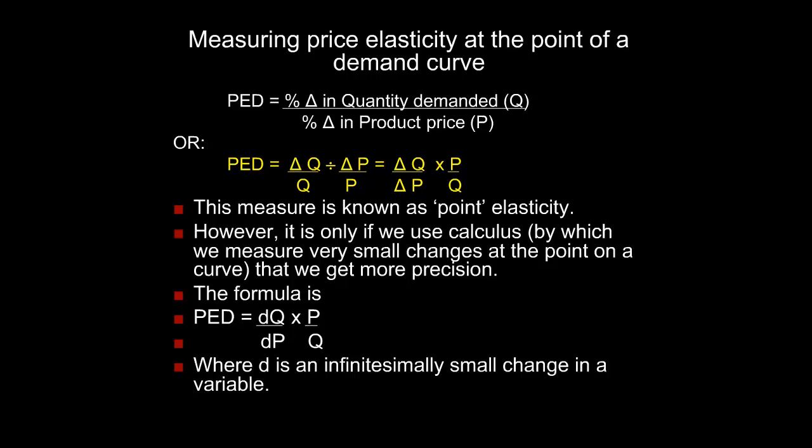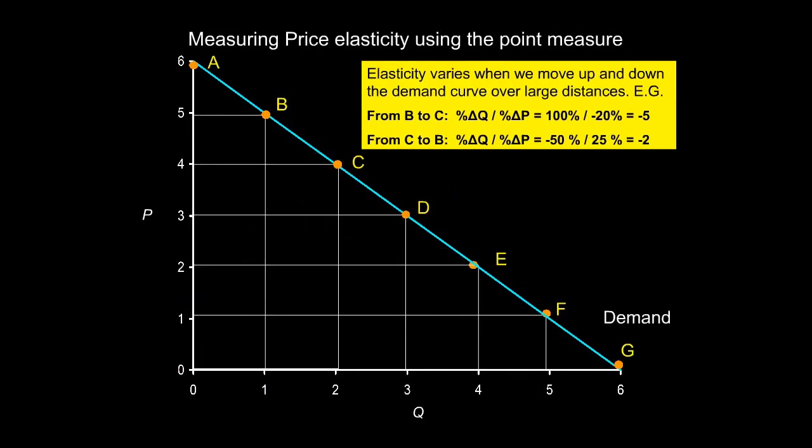In this case, DQ is a very small change in Q and DP is a very small change in P. However, when we look at price elasticity using the point measure, we run into a problem. What we find is that elasticity varies when we move up and down the demand curve over large distances.